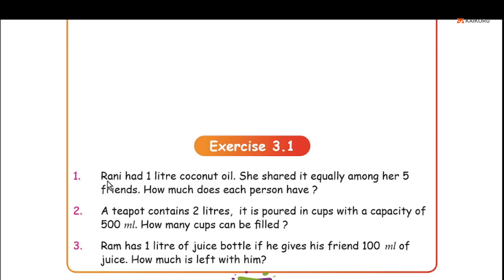Problem number 1: Rani had 1 liter of coconut oil. She shared it equally among her 5 friends. How much does each person have? What is given and what do we need to find?